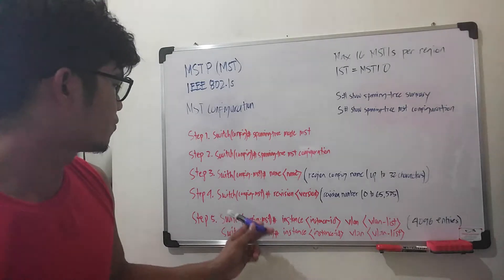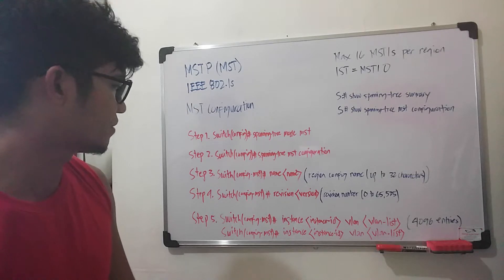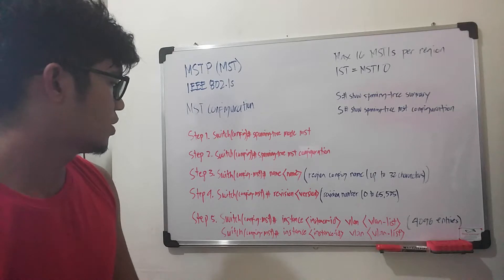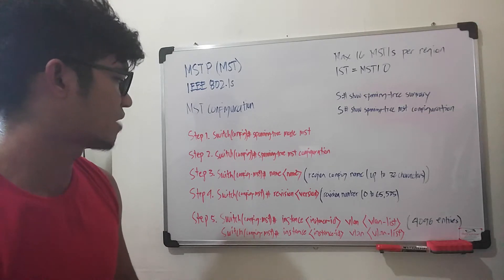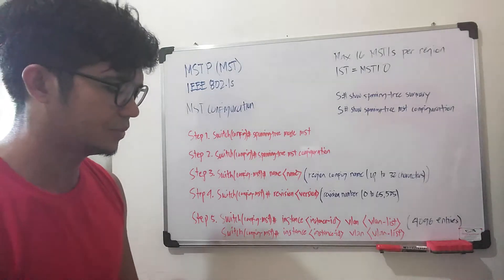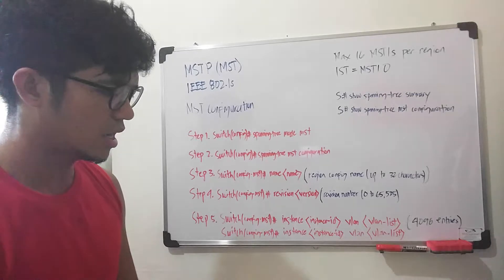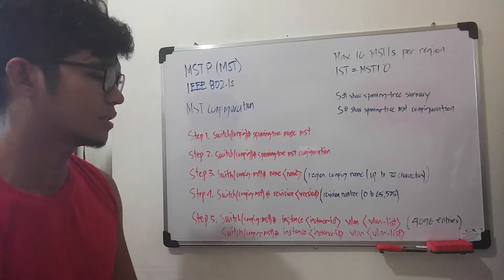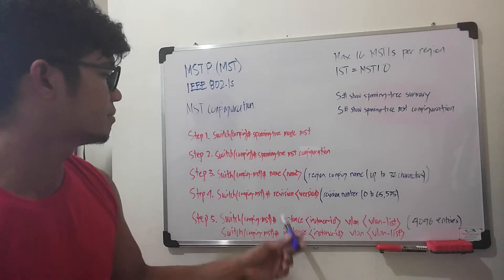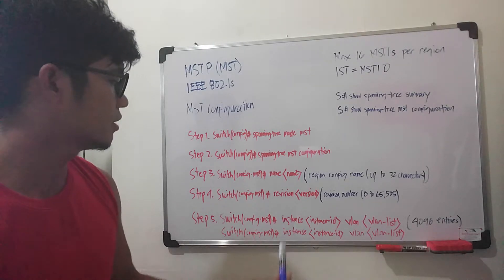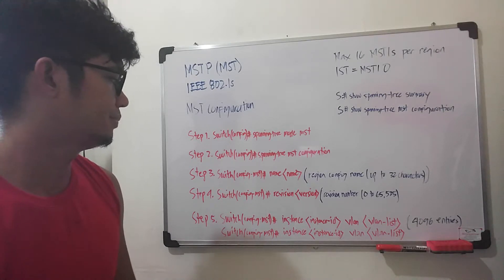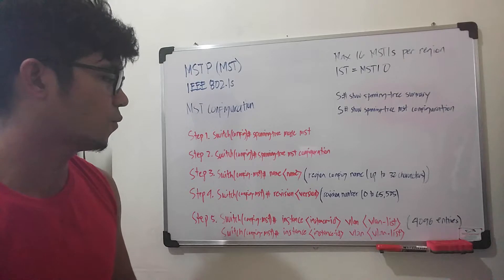Step four is the revision number. You can define your revision number here. This is different from the VTP revision number, because with VTP the revision number is automatically updated, but here you have to update it manually on every switch so you know what changes and what the latest revision is.